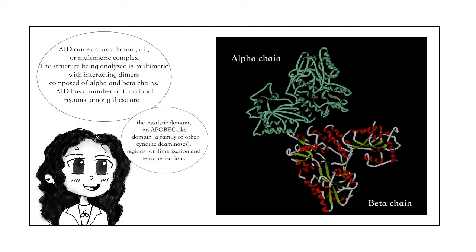AID can exist as a homodimer or multimeric complex. The structure being analyzed is multimeric with interacting dimers composed of alpha and beta chains. AID has a number of functional regions.